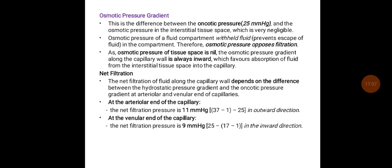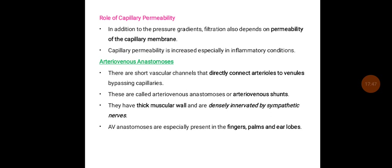The net filtration of fluid along the capillary wall depends on the difference between the hydrostatic pressure gradient and the oncotic pressure gradient at the arteriolar and venular ends of the capillaries. At the arteriolar end the net filtration is around 11 mmHg, moving fluid from the capillary to the interstitial space. At the venular end the oncotic pressure overrules, giving a net pressure of around 9 mmHg inward. In addition to pressure gradients, filtration also depends on the permeability of the capillary membrane, which is increased especially in inflammatory conditions.